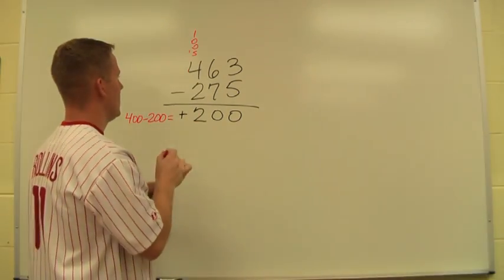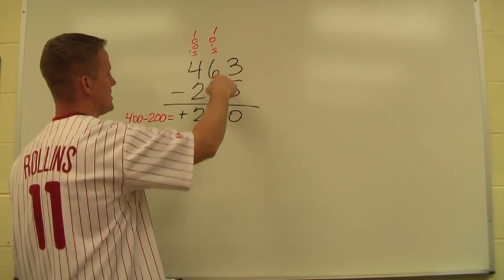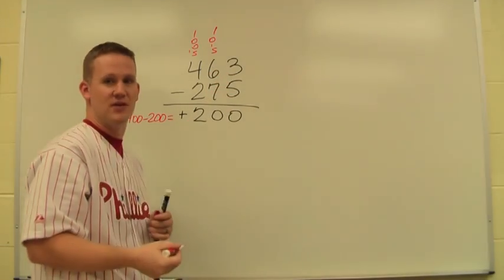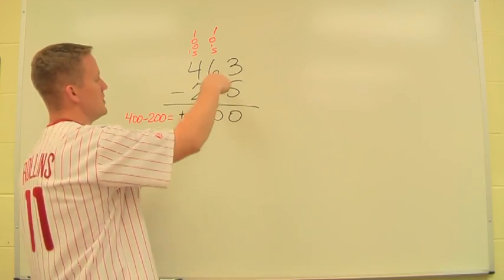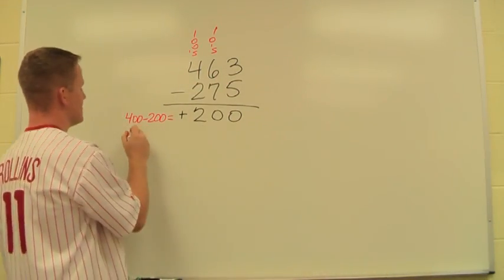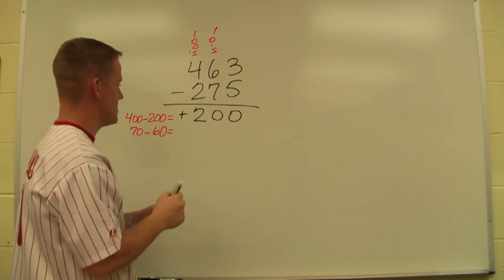I move on to my tens column. 6 tens is 60, 7 tens is 70. Now, you notice right away, 60 minus 70. Our students don't know how to do negative numbers yet, and that's okay here. So instead, I'm just going to forget the order for a second and think of this as 70 minus 60. If I do 70 minus 60, I get 10.